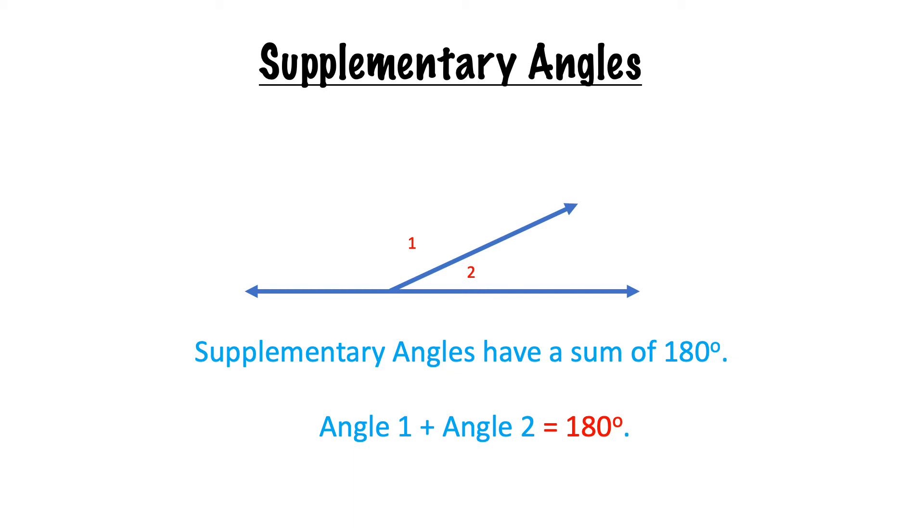Like complementary angles, they do not have to be adjacent and you could have two or more angles that have a sum of 180 and they would be called supplementary.